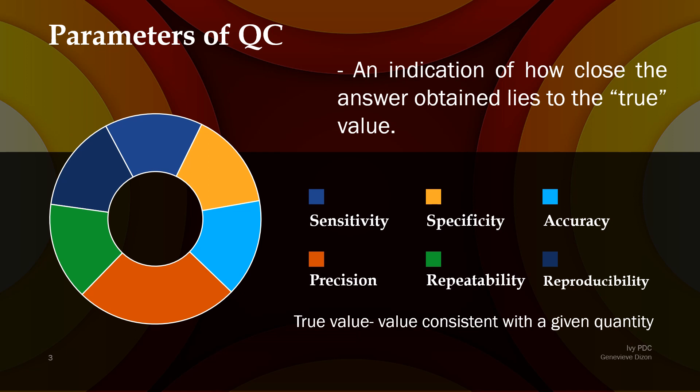When we say true value, we are referring to what we are intended to measure. For example, if a patient is diabetic and she has a fasting blood sugar of 450 in her system, and we obtain her sample and test it and we get 450 as a result, then that means our test is reflecting the true value of the patient. But if our result is far from 450 — maybe higher, like 500, or lower, like 200 — that means we were not able to reflect the true value of the patient.